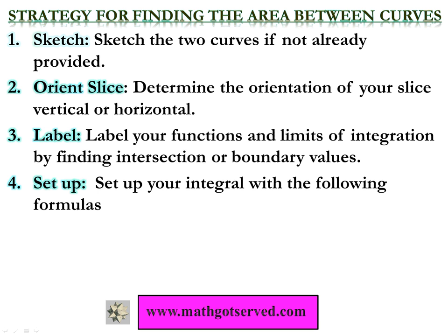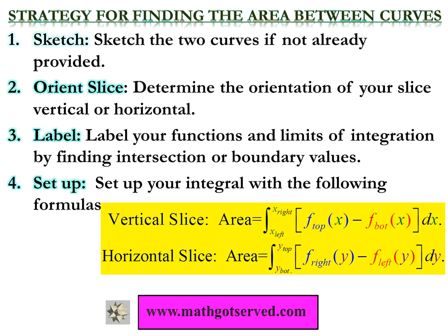After labeling completely, step four is to set up your integral using the appropriate formula. We have two formulas. If you are slicing vertically — up and down in the y-direction — your slices move from left to right, so everything involves x's. The integral runs from x-left to x-right of the top function minus the bottom function, dx. This is the formula for finding area when slicing vertically.